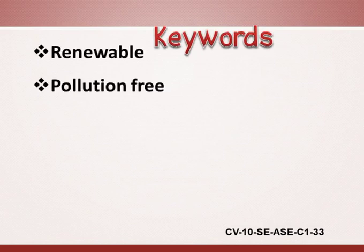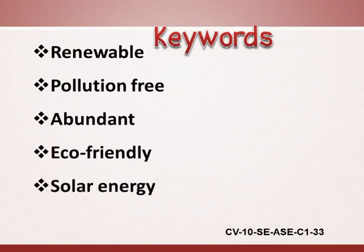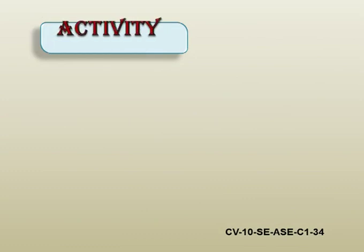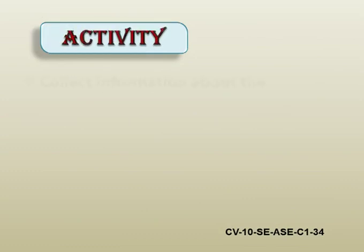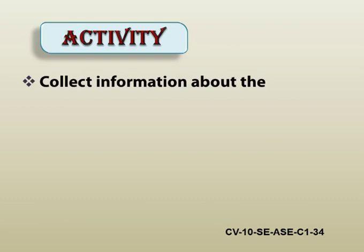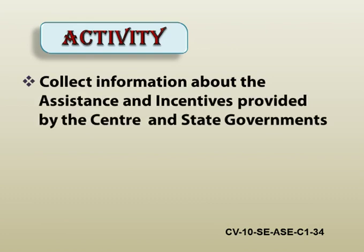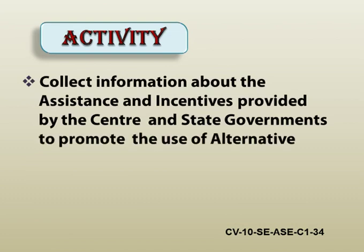In this capsule, the key words are: renewable, pollution-free, abundant, eco-friendly, solar energy, solar pond. Here is an activity for you — do it on your own. Collect information about the assistance and incentives provided by the central and state governments to promote the use of alternative sources of energy.